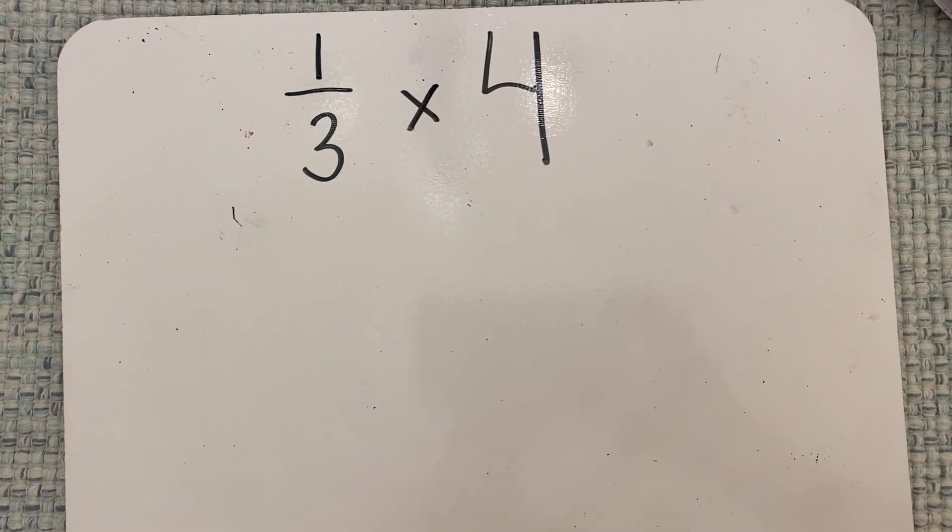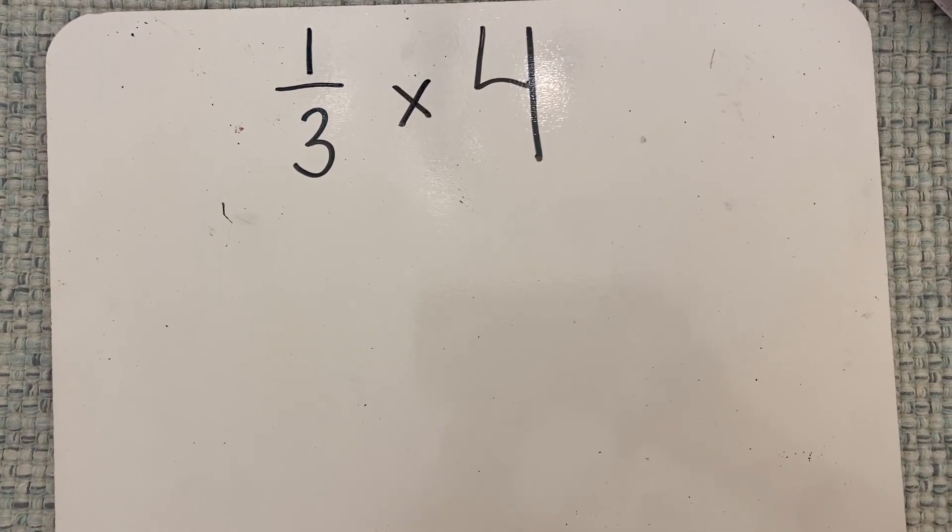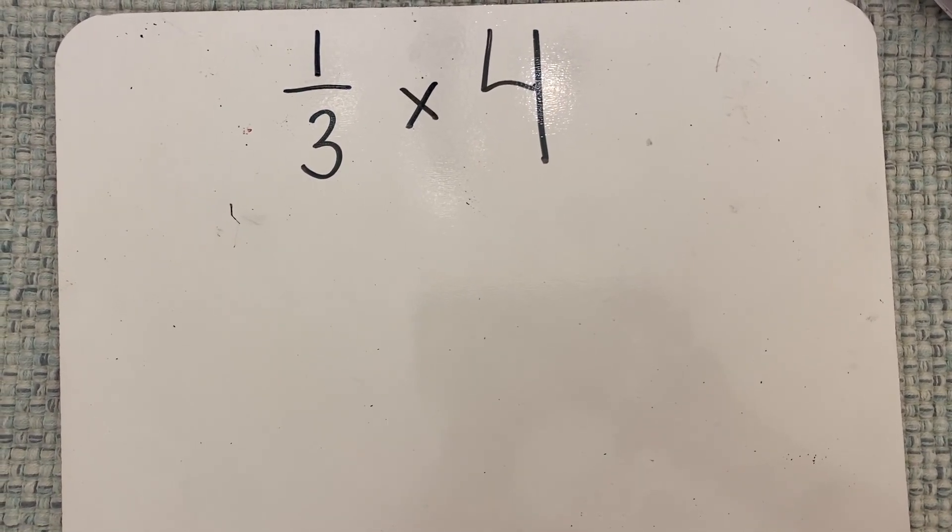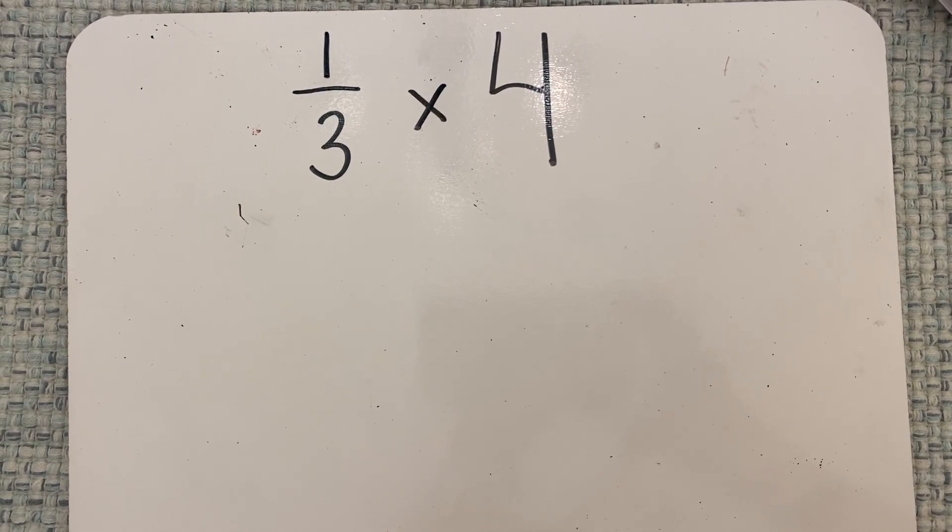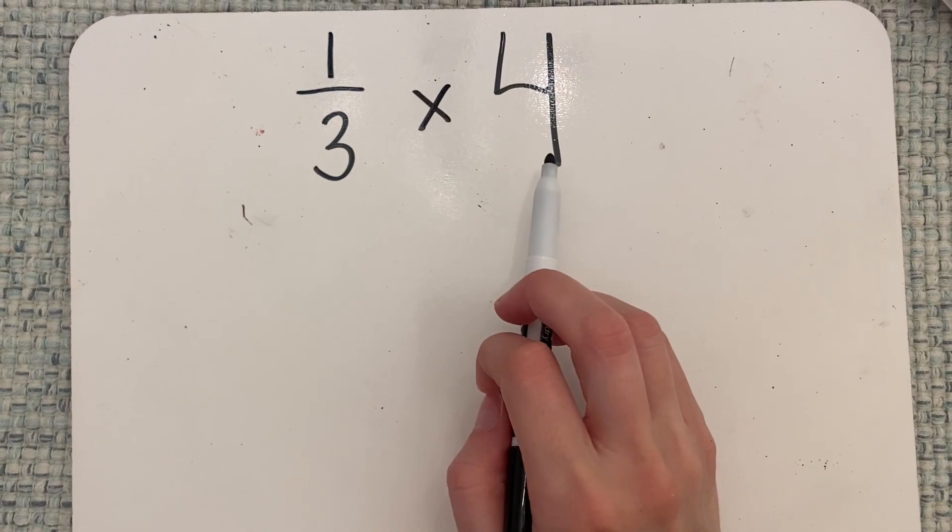When we're multiplying a fraction by a whole number, the process is going to look pretty much the same, but the context is a little bit different. So instead of finding four groups of one-third like before, I'm finding one-third of four wholes.